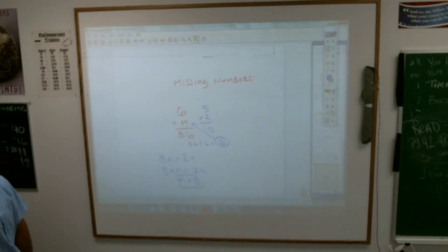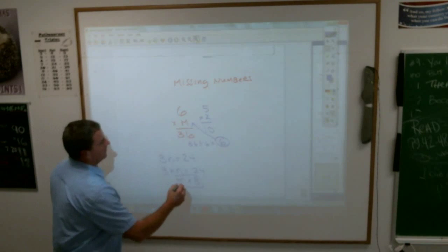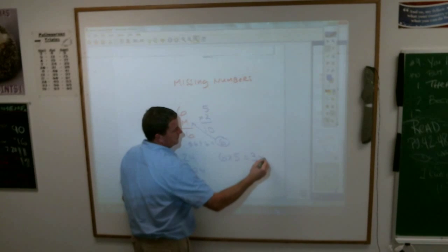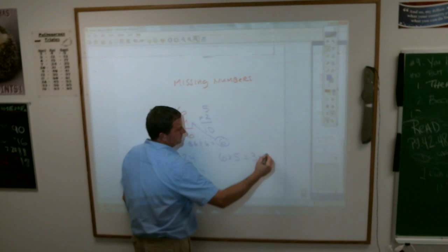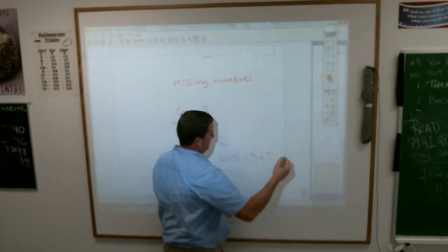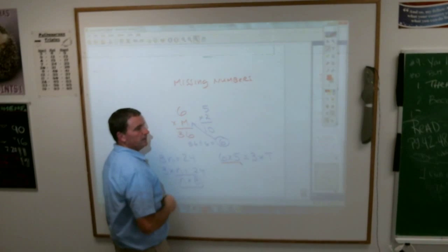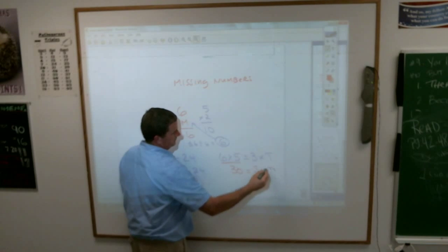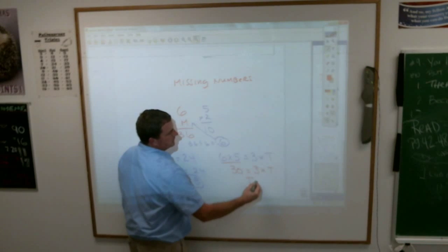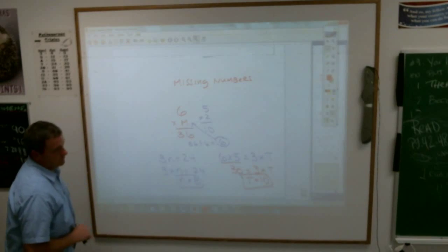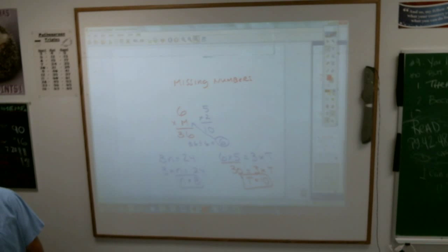Or sometimes it'll get really crazy on you and do this. Six times five equals three times what number? Well, you'd have to do what you can to figure out what you need. What's six times five? Thirty. Thirty. And then three times what number is thirty? There you go. So three times ten equals thirty. I don't know if there's anything else really that gives you that's any harder than that.